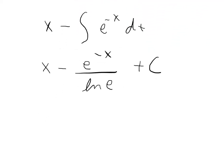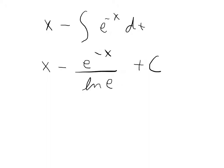As you keep moving down here, if you look in your denominator, you have an ln and an e, which those terms will just cancel. So you're going to be left with x minus e to the negative x plus c.